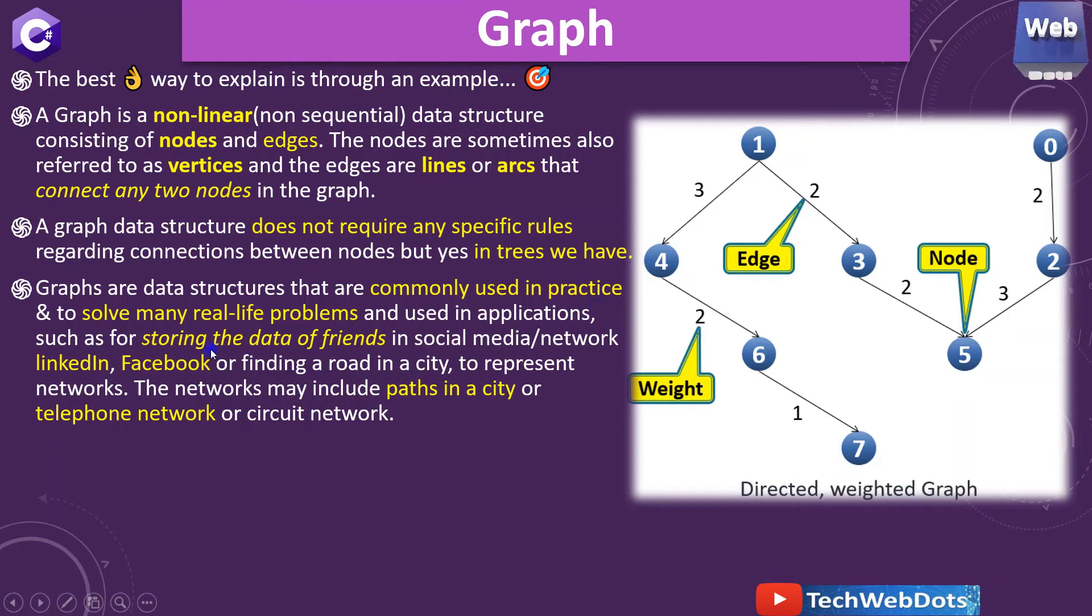Graphs are data structures that are commonly used in practice to solve many real-time problems and used in applications such as storing data of friends in social media or social networks like LinkedIn, Facebook, or finding a road in the city or to represent networks. The networks may include paths in the city or telephone network or circuit network.